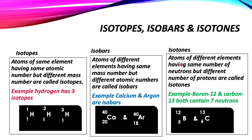Isotones: atoms of different elements having the same number of neutrons but different number of protons are called isotones. For example, boron and carbon — their atomic numbers are different, but they both have seven neutrons.